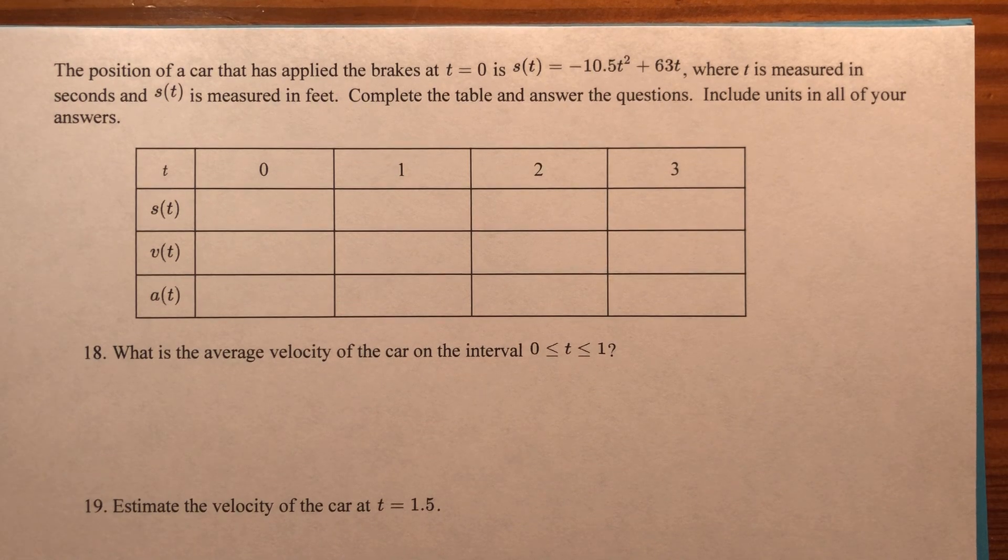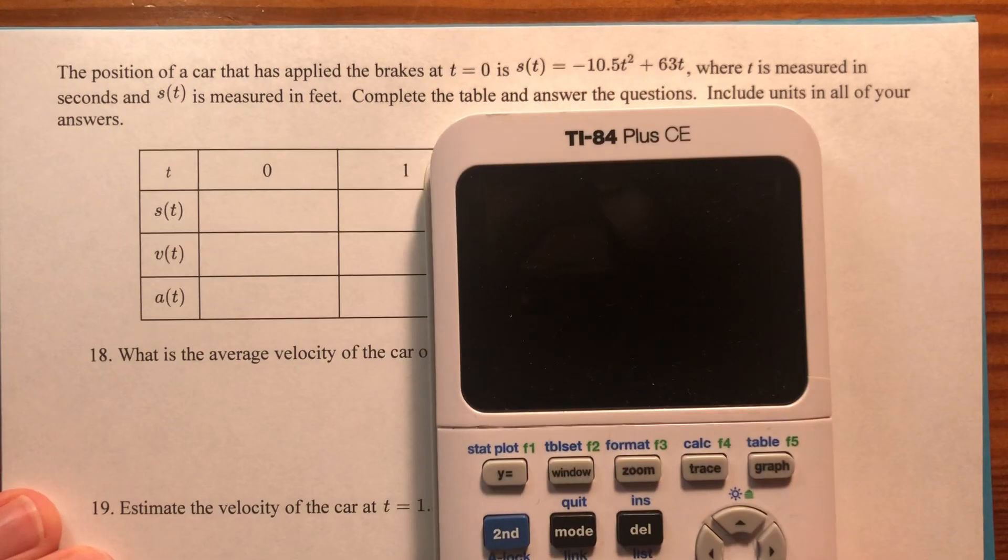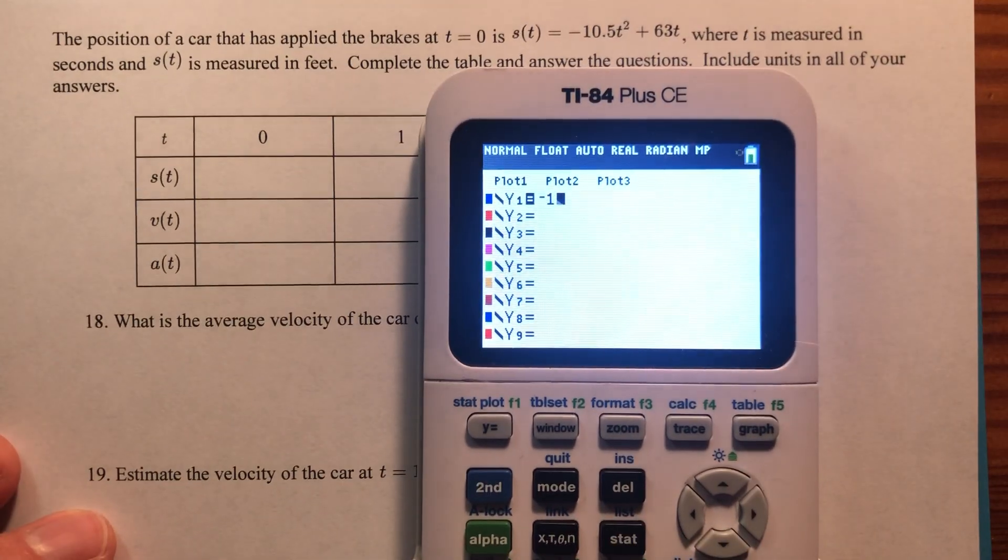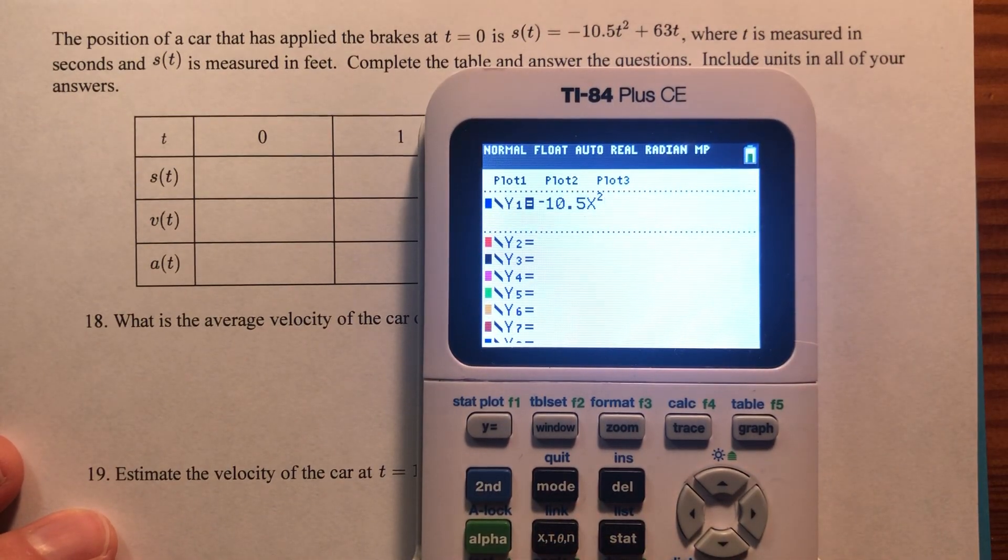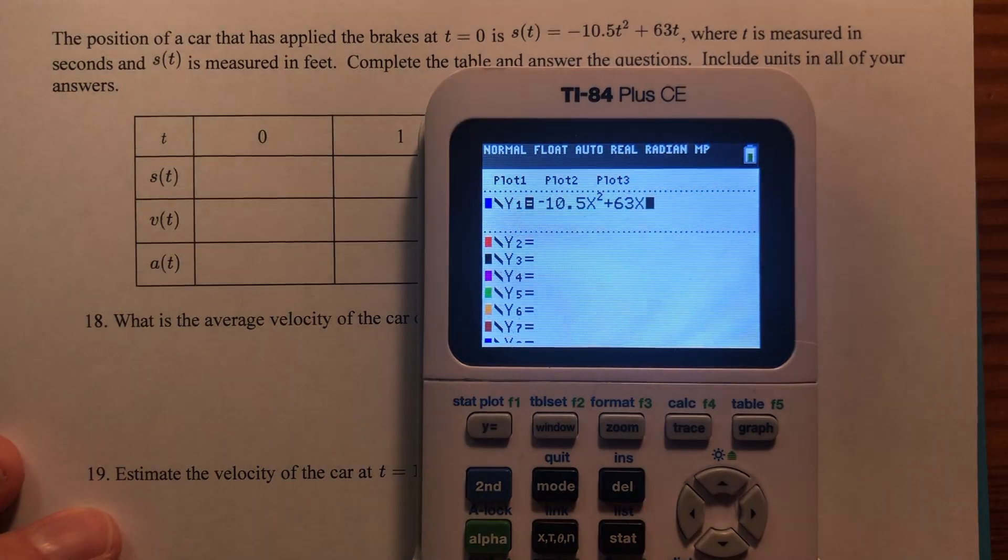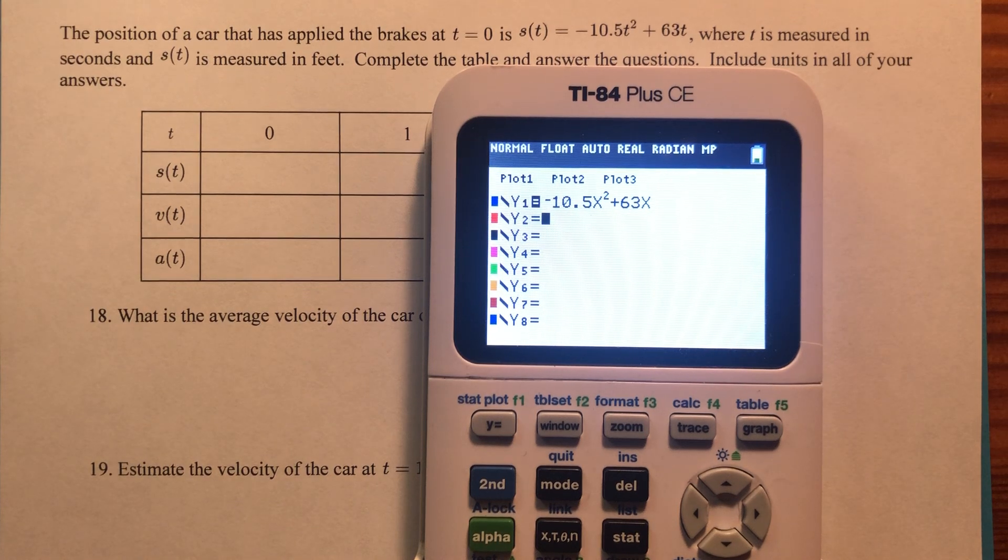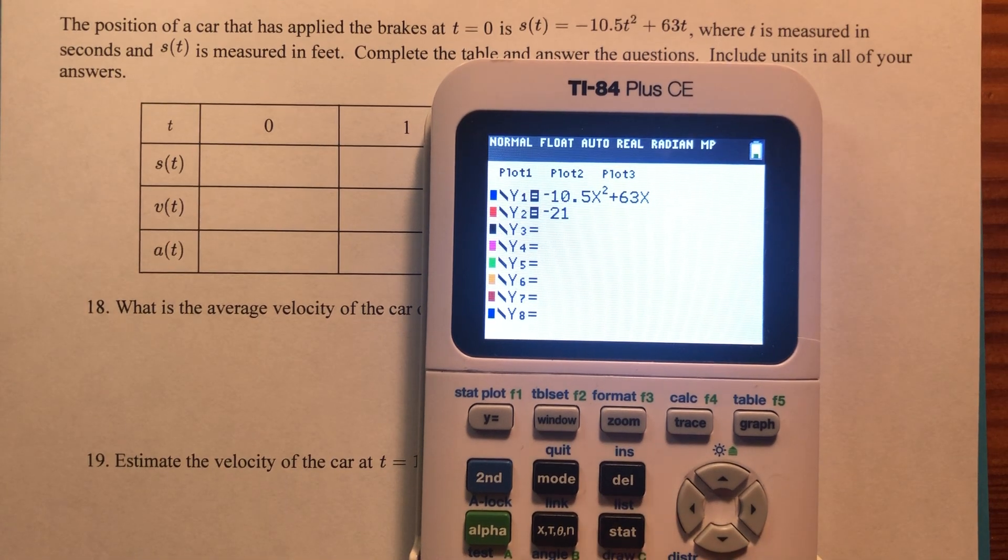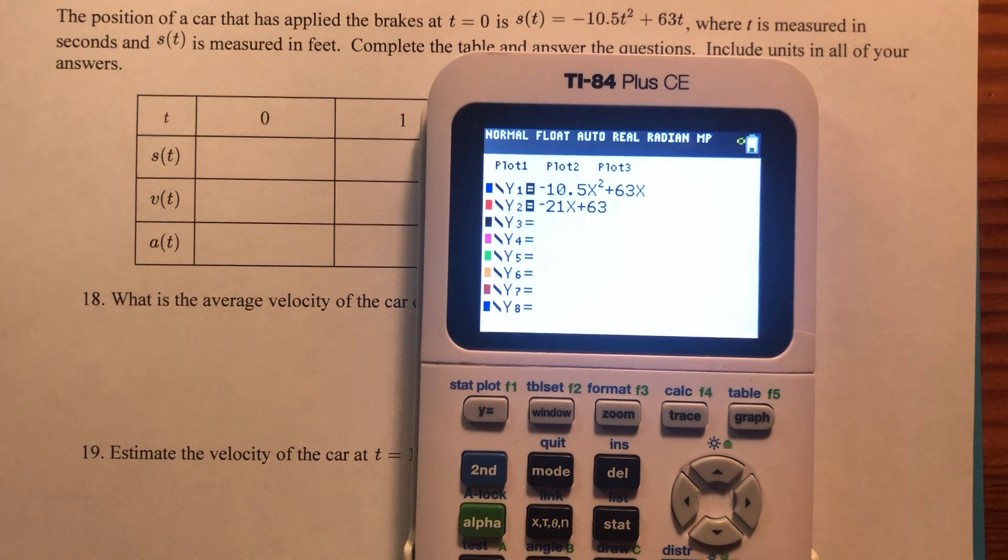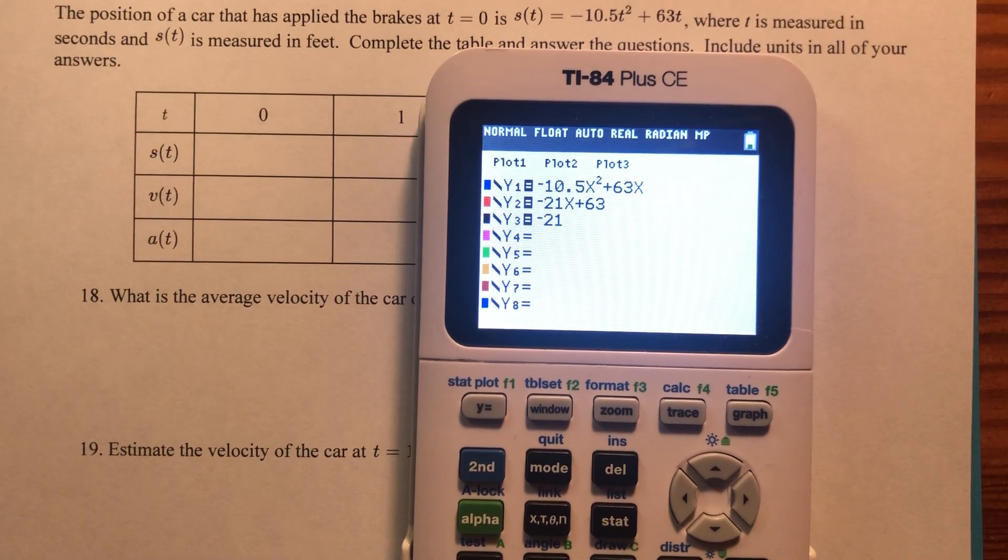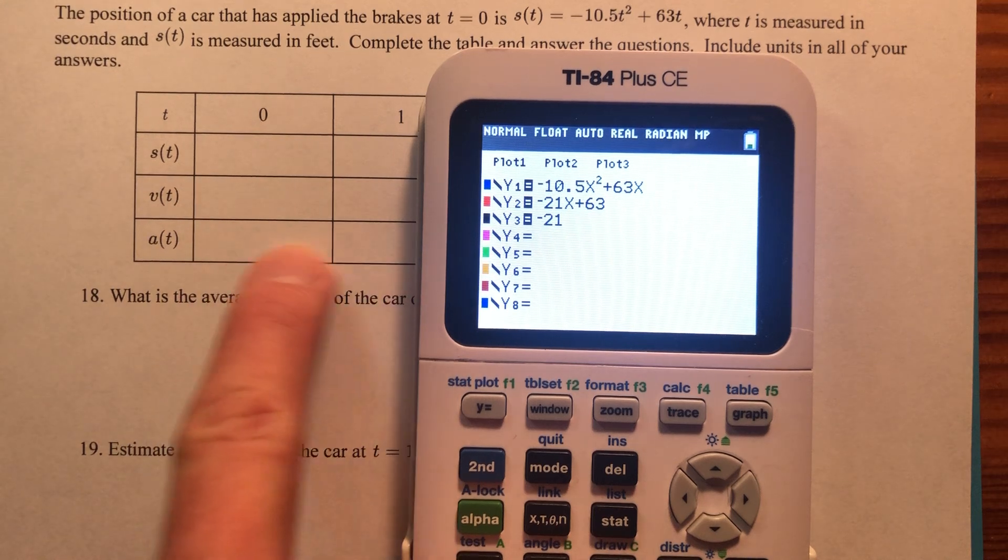So what we're going to do is a little calculator trick on this one. Let's go ahead and type it in. Let's type negative 10.5 x squared. So instead of t, we'll use x. We'll also put the derivative in. The derivative of this is going to be negative 21 x plus 63. And then the derivative of that is just negative 21, which really tells us what this entire row is going to be.